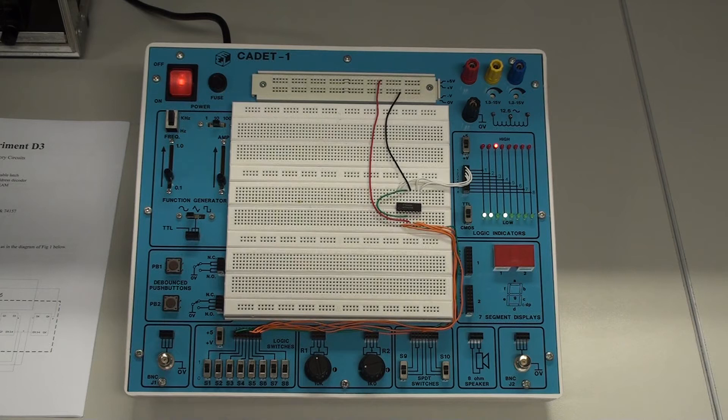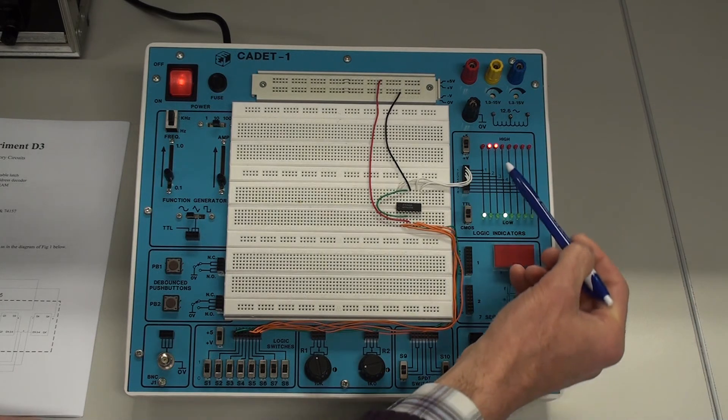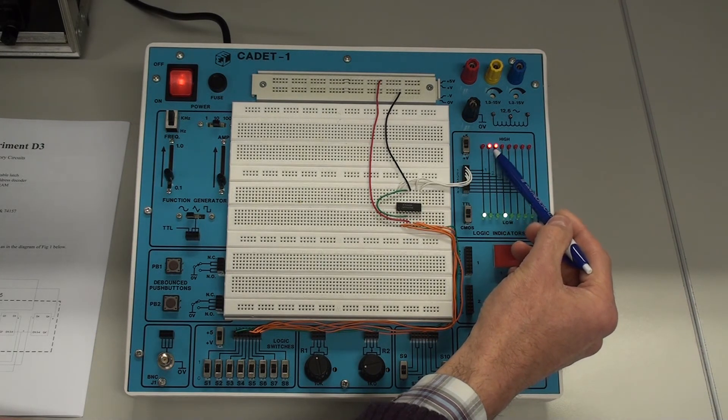So for example, if I want to store, say, six. So that's six, I write six on the switches. And I can see that that information is now written to the latch.